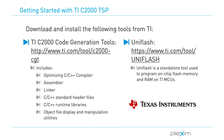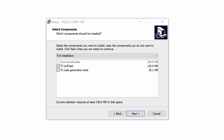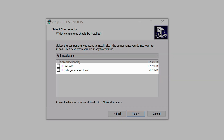The first one is C2000 Code Generation Tools. The CGT includes a compiler, assembler, linker, and additional tools to build C or C++ applications for the TIC2000 family of MCUs. The second tool used is UniFlash. UniFlash is a tool to program the on-chip flash memory as well as RAM of TI MCUs. If you used the installer executable in the setup process earlier, then these tools should have already been installed.